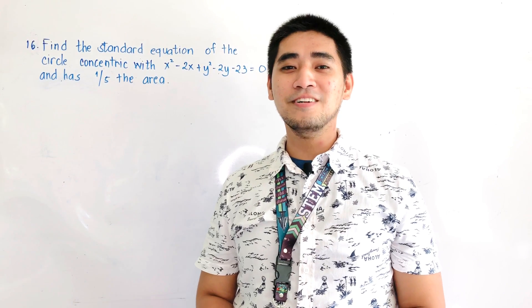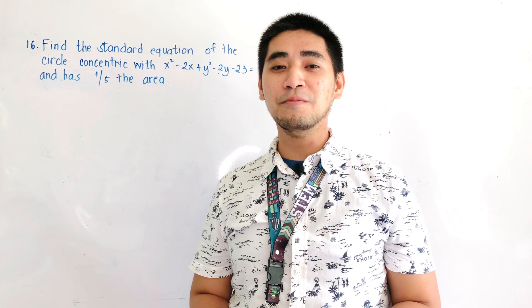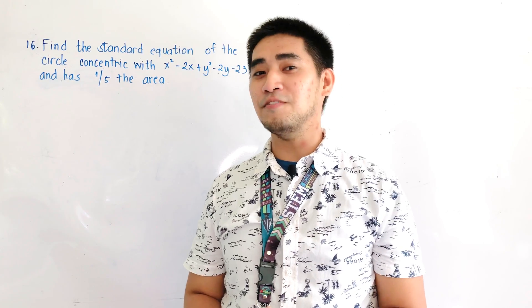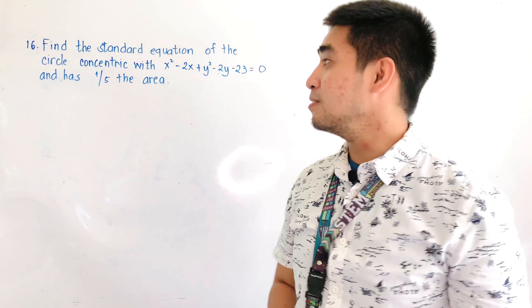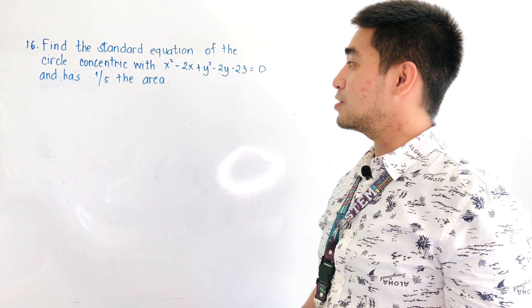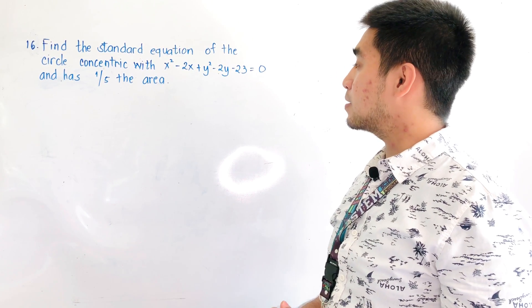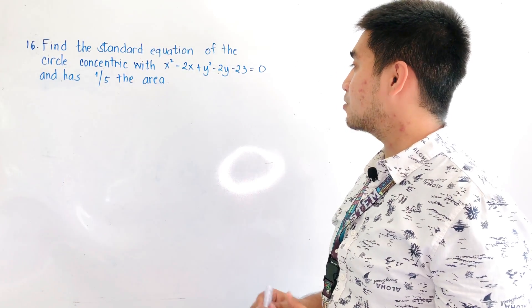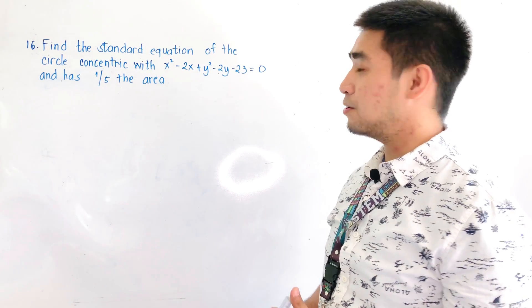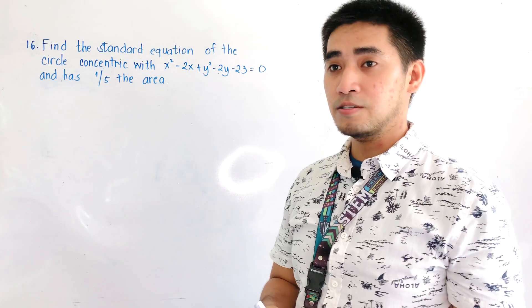Hi Judgers! Welcome to another segment of One Earlywag Memorial High School Senior High School Math TV. For today's example: find the standard equation of the circle concentric with x squared minus 2x plus y squared minus 2y minus 23 equals 0 and has one-fifth the area.